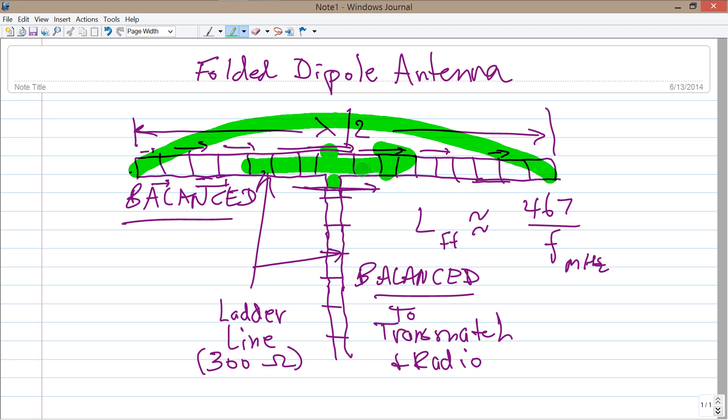But something very interesting happens at this feed point here. At this feed point, if you have an ordinary half wave dipole antenna with a single conductor, it would be 73 ohms, which we might round off to 75 ohms for all intents and purposes.